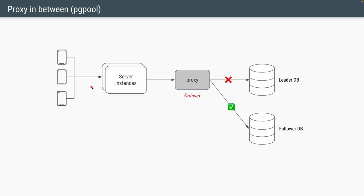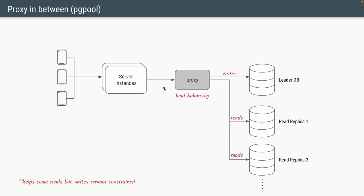One way to avoid that is to add a proxy. A proxy is a service which sits between our application servers and the database itself, so that any time a database goes down, you can just change the proxy configuration to switch over to a different database. Another benefit of the proxy is it can do connection pooling, which means it can limit the number of connections being made to the database. The third benefit is load balancing — you can have multiple replica databases and any time reads are fired to the proxy, the proxy will load balance all the reads between multiple read replicas. Read replicas can scale horizontally, so you can scale the number of reads just by using simple load balancing.